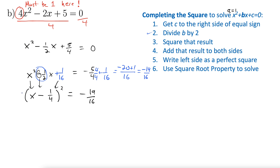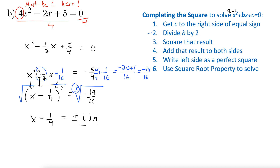Step 6: use the square root property to solve. Taking the square root of both sides and adding plus or minus gives us x minus one-fourth equals plus or minus the square root of negative 19 over 16. The negative inside the square root gives us i rad 19, and the square root of 16 is 4, so this is plus or minus i rad 19 over 4. We solve for x by adding one-fourth to both sides: x equals one-fourth plus or minus i rad 19 over 4.